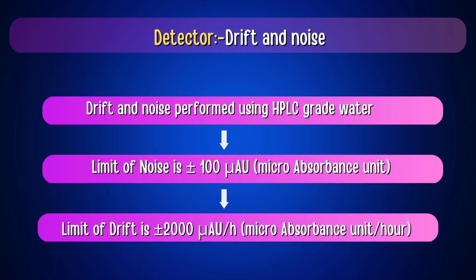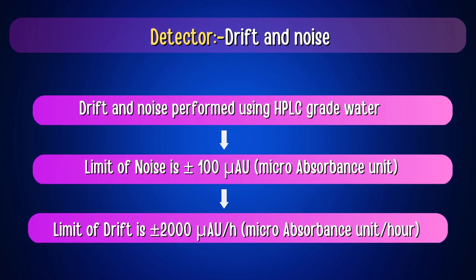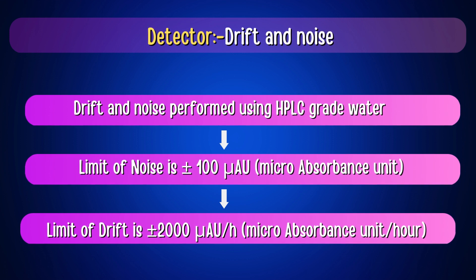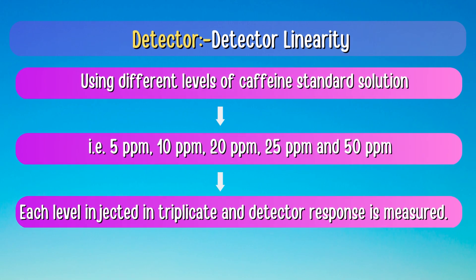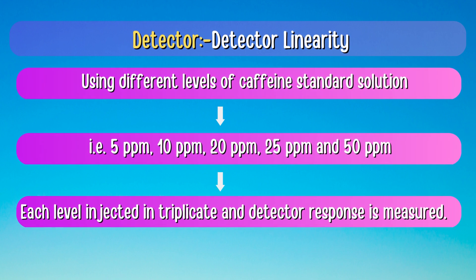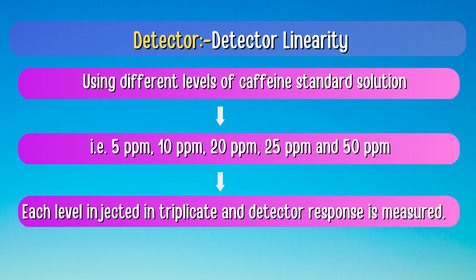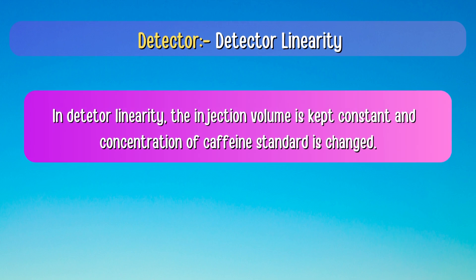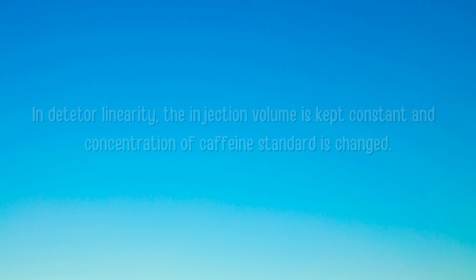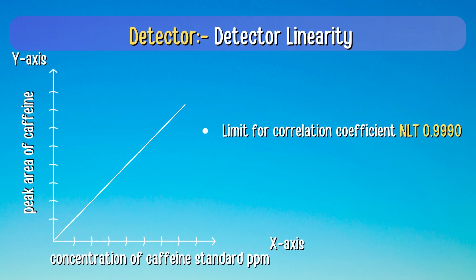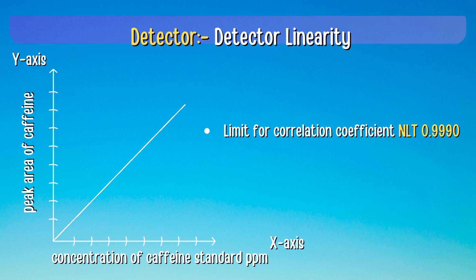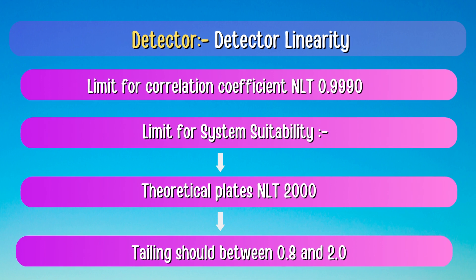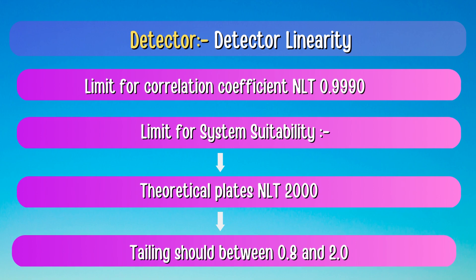For Drift and Noise, the test is performed using HPLC grade water. The limit for noise is ±100 µAU and the limit for drift is ±2000 µAU per hour. For Detector Linearity, different levels of caffeine standard solution are used: 5 ppm, 10 ppm, 20 ppm, 25 ppm, and 50 ppm. Each level is injected in triplicate and detector response is measured. The injection volume is kept constant while the concentration of caffeine standard is changed. A linearity graph is plotted with concentration on the x-axis against average peak area on the y-axis, and the correlation coefficient and system suitability are checked. The limit for correlation coefficient should not be less than 0.999. For system suitability, theoretical plates should be not less than 2000 and tailing factor should be between 0.8 and 2.0.